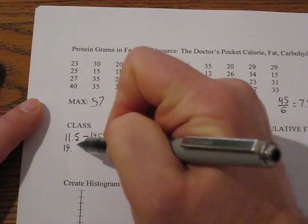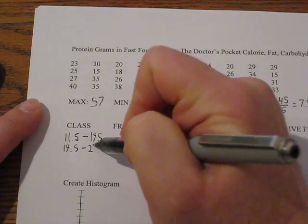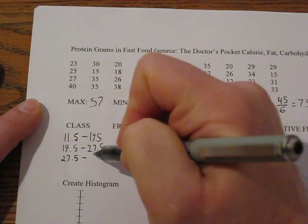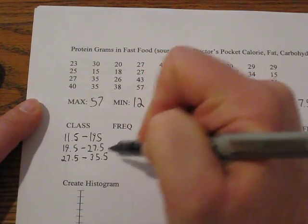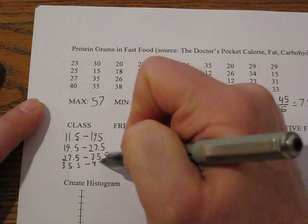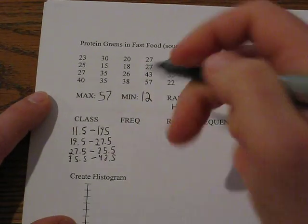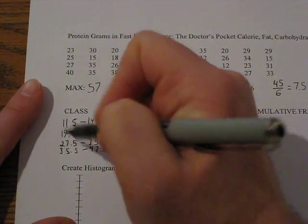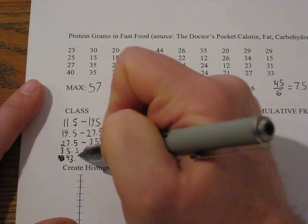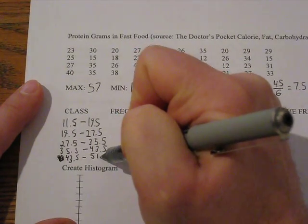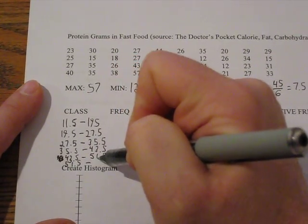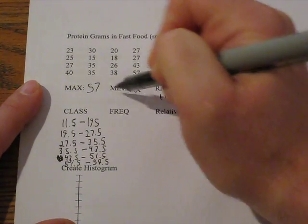Then from 19.5 we go up 8 units to 27.5, and continue this pattern until we get six intervals: 27.5 to 35.5, 35.5 to 43.5, 43.5 to 51.5, and our final case is 51.5 all the way up to 59.5, which covers our maximum.